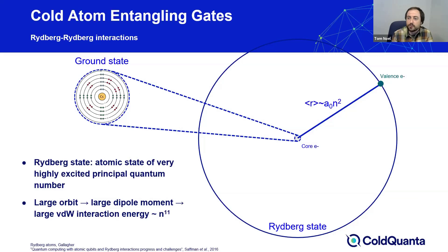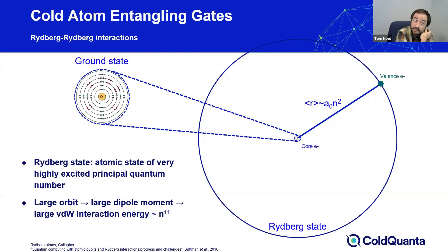Before getting to the cold atom CZ implementation, we need a quick primer on Rydberg atoms. To implement multi-qubit gates in any architecture, you need a state-dependent interaction between qubits. In the ground state where our qubit is encoded, even extremely nearby atoms really don't interact — there are negligible interactions, which is actually a nice feature when atoms are idling, as they remain very coherent. This is where the use of Rydberg states comes in. Rydberg states are highly excited states with very large principal quantum number N. These highly excited states of the valence electron have very large valence electron orbits, resulting in a very large dipole moment, and large dipole moments give rise to large van der Waals interactions.